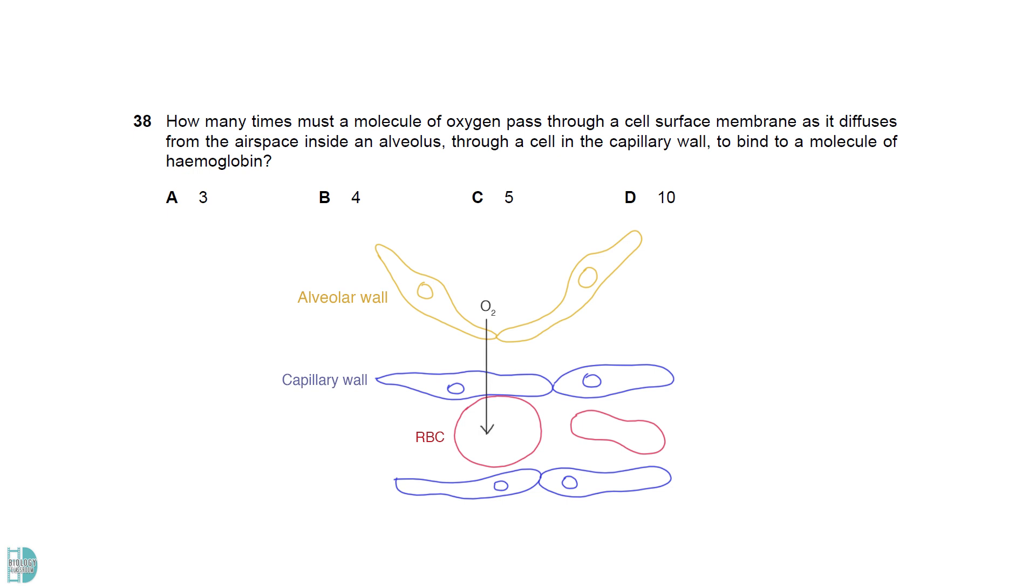Let me show you the path taken by the oxygen to enter a red blood cell. There are 5 membranes to pass through.